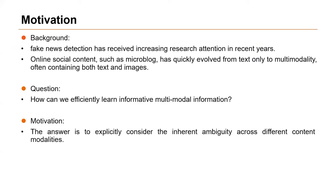Fake news detection has received increasing research attention in recent years, and online social content, such as micro-blogs, has quickly evolved from text-only to multimodality, often containing both text and images. It is natural to ask: how can we efficiently learn informative multimodal information for multimodal fake news detection? In this work, we tend to answer this question from the perspective of learning the inherent ambiguity across different content modalities. This is the key motivation of our work.